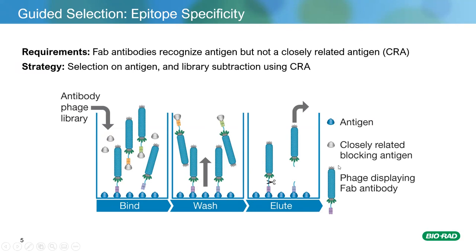In the blocking strategy, you have your target antigen shown in blue and a closely related antigen you don't want cross-reactivity to. We immobilize the target antigen and use a higher concentration of the closely related antigen in the solution phase. Cross-reactive phage are competed out and lost during the wash step because the closely related antigen is not immobilized. Across all three enrichment rounds, this depletes cross-reactive antibodies and leaves phage displaying fragments that recognize features unique to the target antigen. One of my team's key responsibilities is combining one or more such strategies to meet the customer's success criteria.